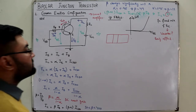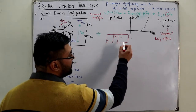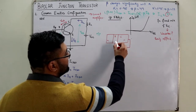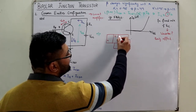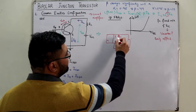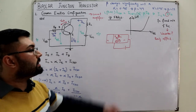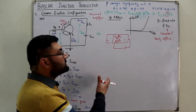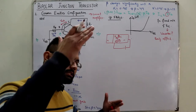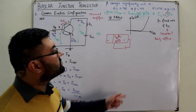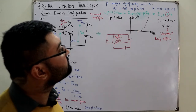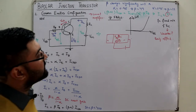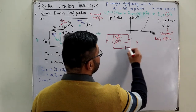The base-width modulation: in an NPN transistor, the collector-base junction is reverse biased. As you increase the reverse bias potential, the depletion layer increases and penetrates more into the already thin base region, making it even thinner. This reduces recombination chances further. If recombination decreases, the base current IB further reduces.